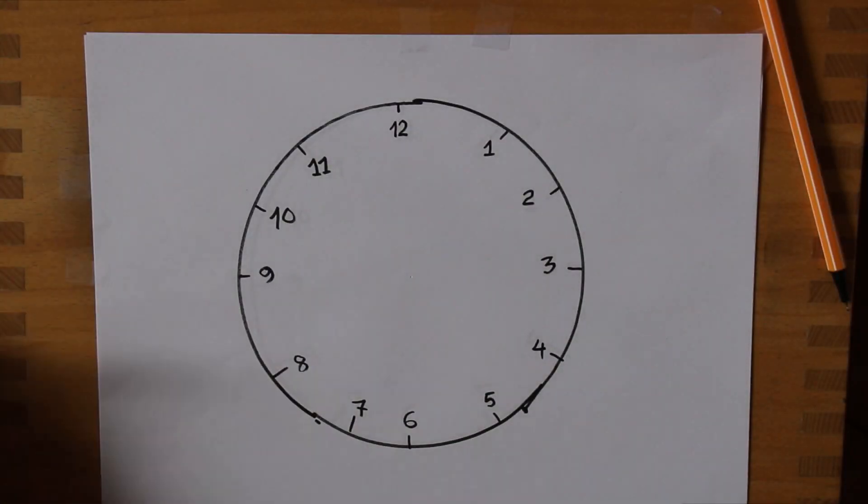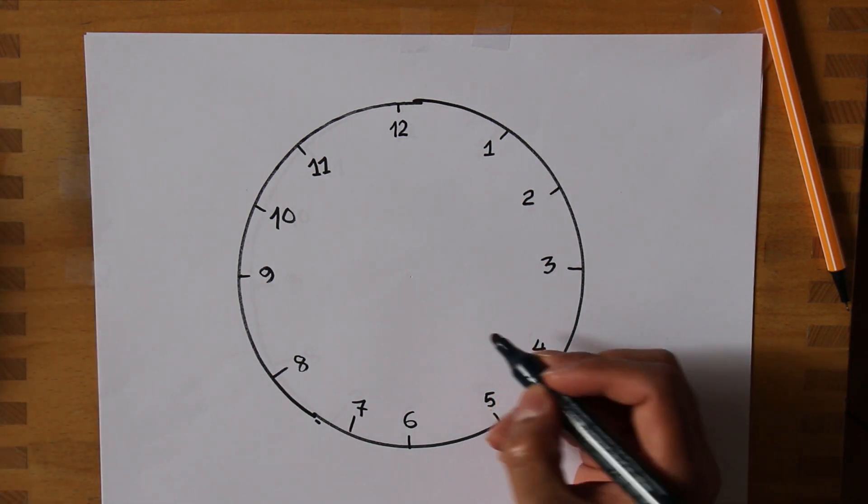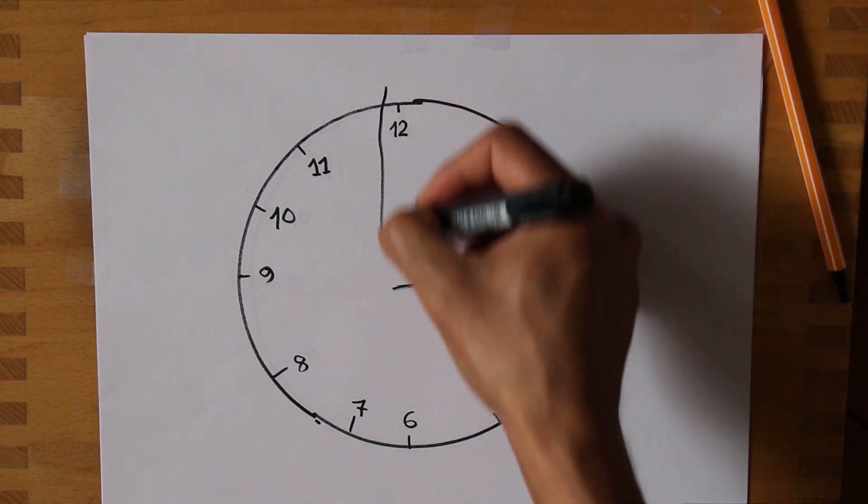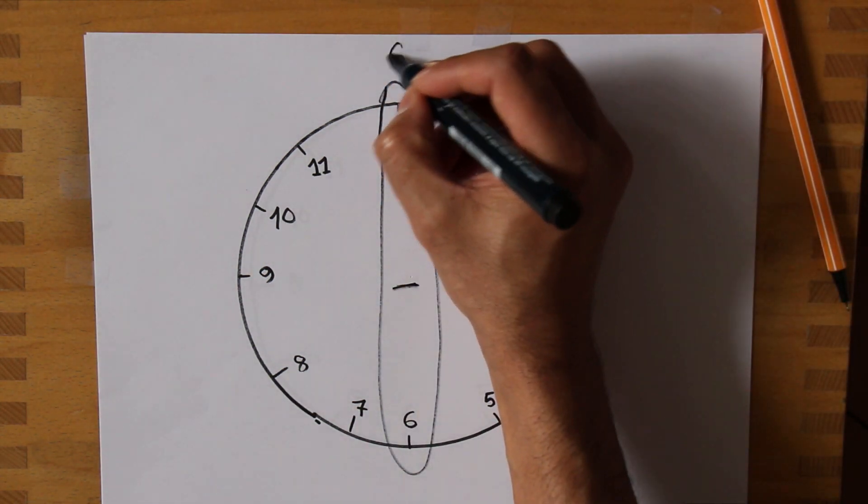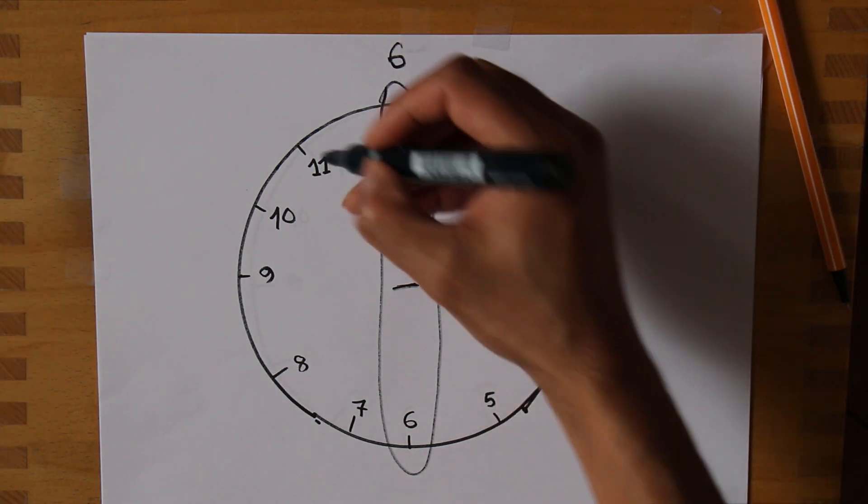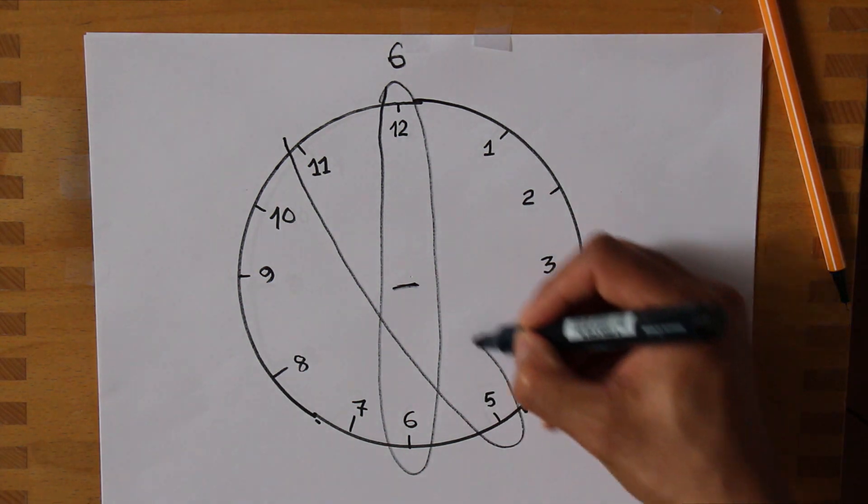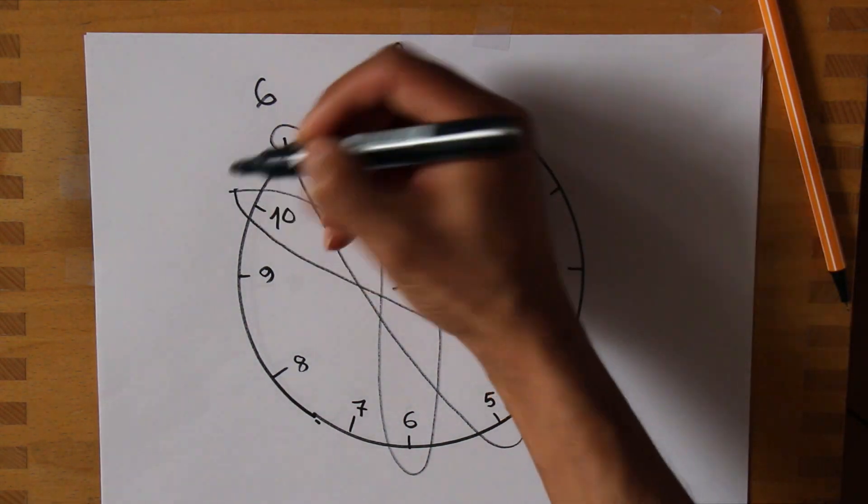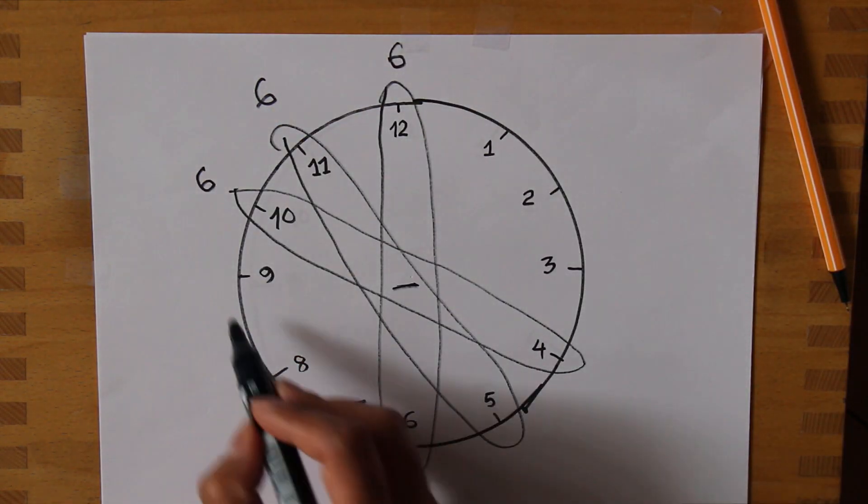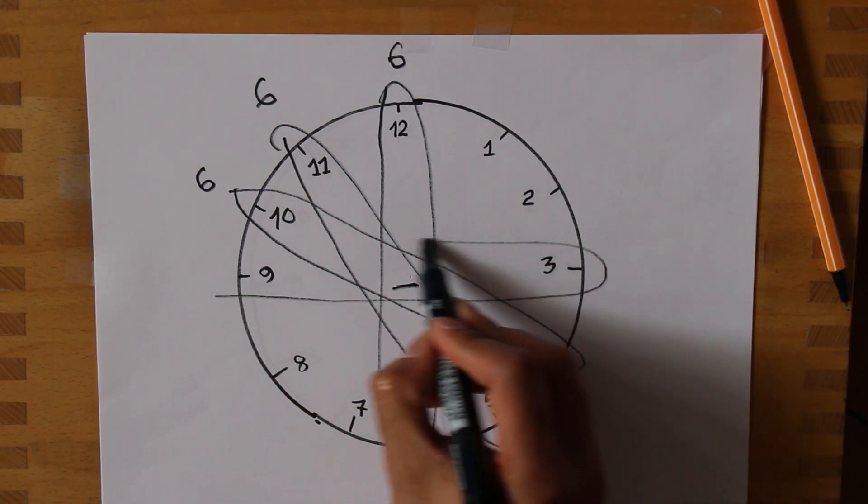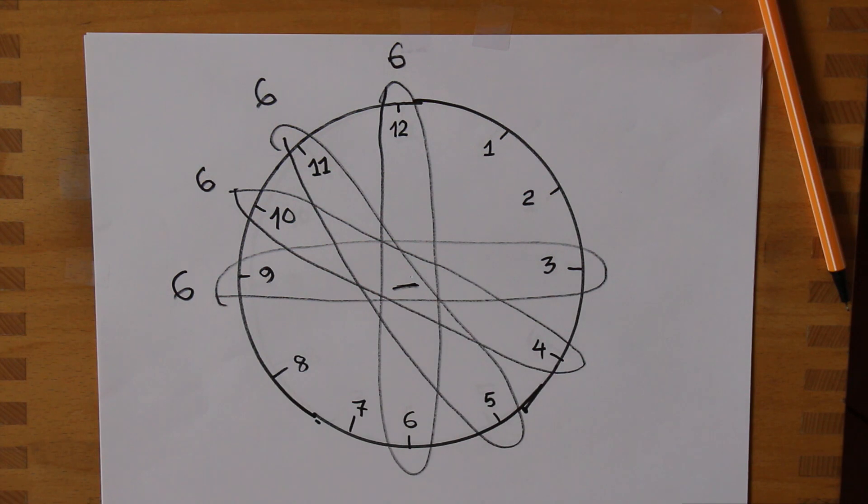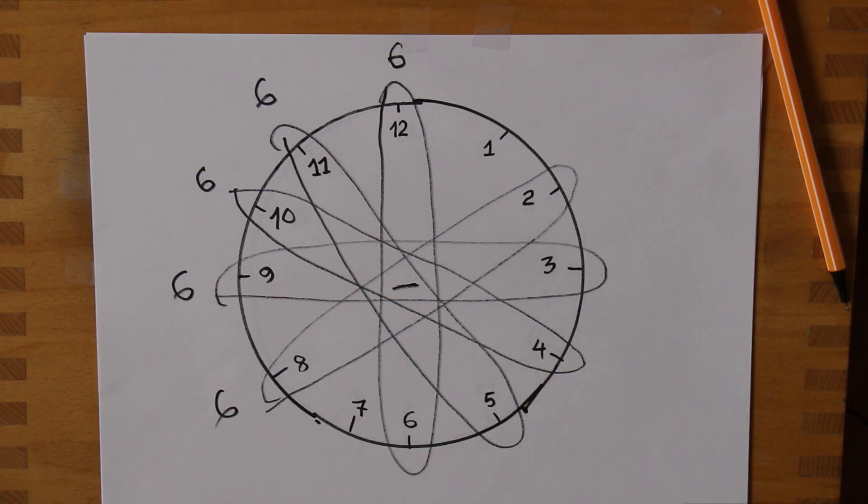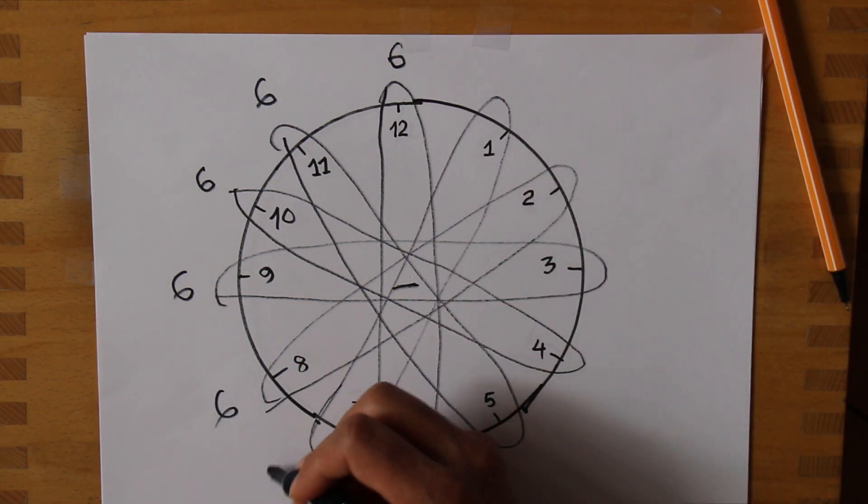I found something else again. If I subtract these numbers: 12 minus 6, the result is 6. If I subtract 11 minus 5, result is 6. 10 minus 4 is also 6. 9 minus 3 is also 6. 8 minus 2 is also 6. 7 minus 1 is also 6.